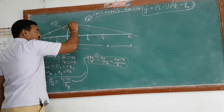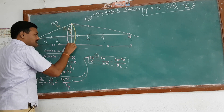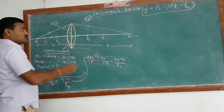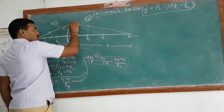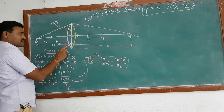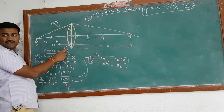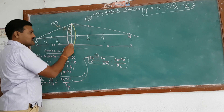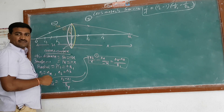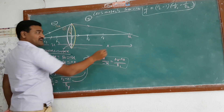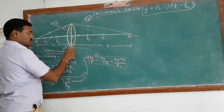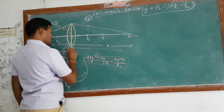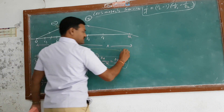The image will not actually form at Q because there is a second curved surface — a concave surface. The image Q formed due to the first convex surface will act as an object for the second concave surface. It will act as a virtual object.